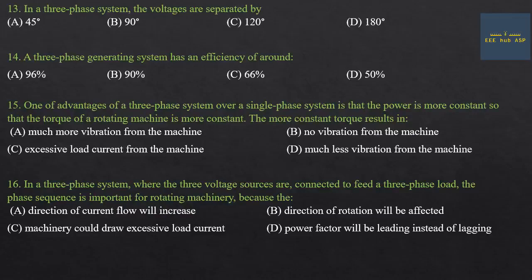Thirteenth question: In a three-phase system, voltages are separated by 120 degrees — R, Y, B. Option C is the answer. Fourteenth question: A three-phase generating system has an efficiency of 96 percent. Fifteenth question: One advantage of a three-phase system over a single-phase system is that power is more constant, resulting in more constant torque for rotating machines and much less vibration. Option D is the answer.